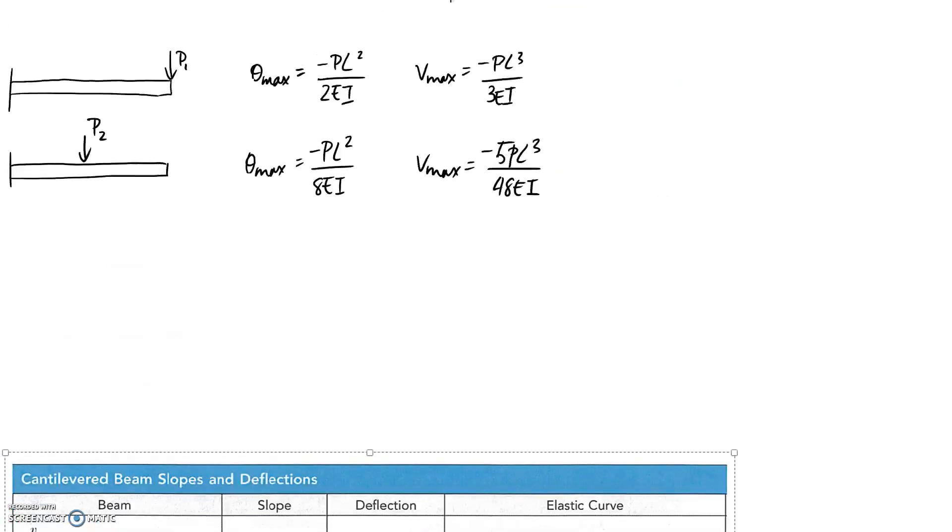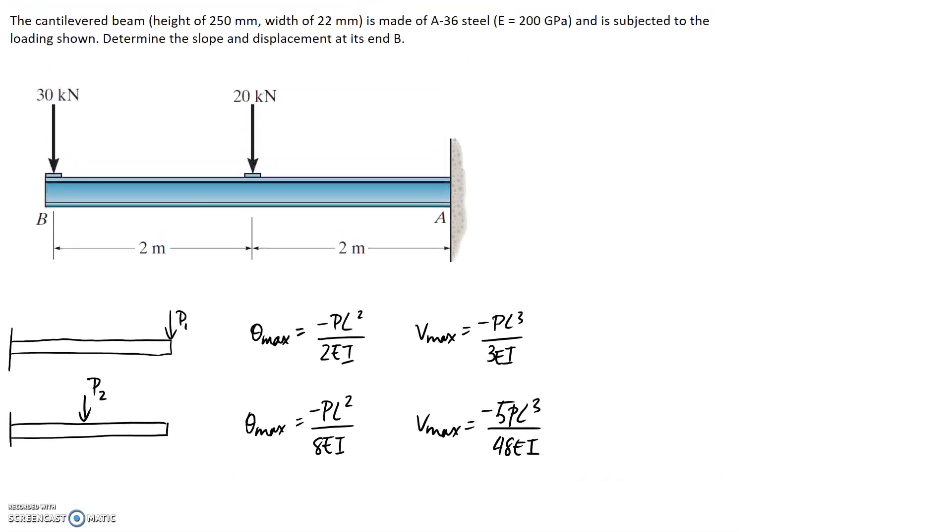I've copied out the case from the table where we have that point load on the end and I've called it P1. So I'm going to correct the equations that I copied out to have P1 in them as well. This is just to avoid confusion because our second case as well includes a P in it. So we're going to call this one P2. So now all we need to do is apply superposition, which is where we say the combined case up the top is equal to this case plus this case added together.